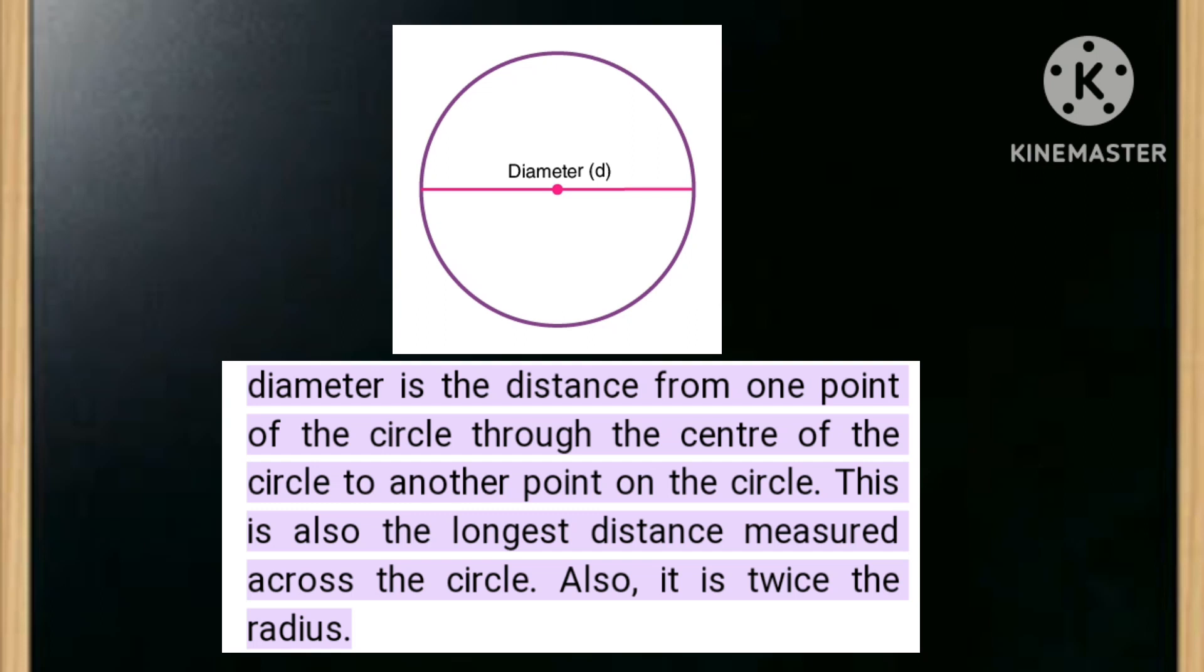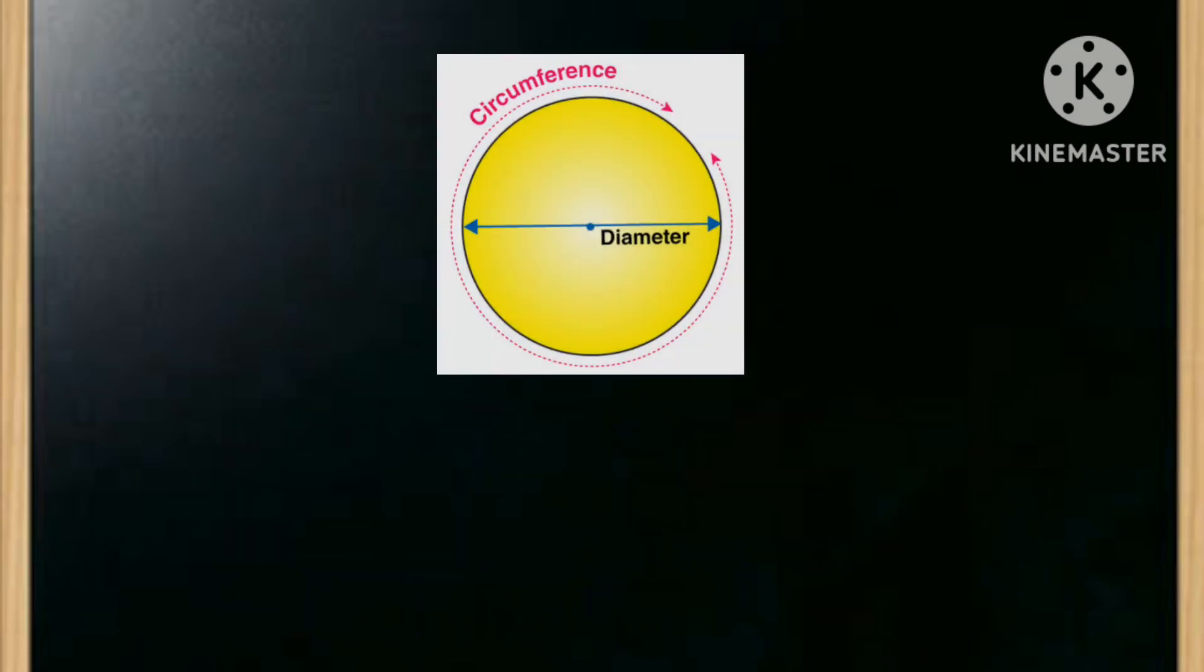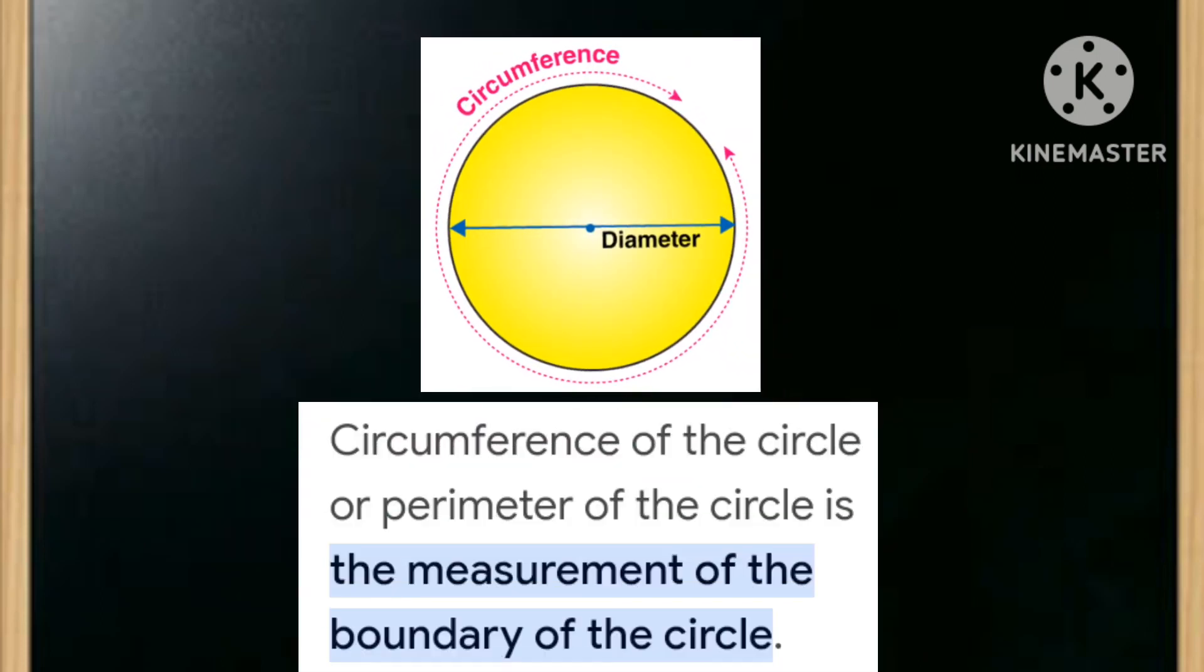What is circumference? Circumference of the circle or perimeter of the circle is the measurement of the boundary of the circle.